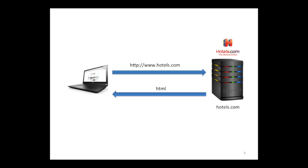As soon as you press enter, the first thing that happens is your browser sends out a request to hotels.com's server to fetch a web page. For this purpose, the browser uses a computer network protocol called HTTP. As a response, the server sends back an HTML file — a text file that contains a list of all the resources your browser has to subsequently download from hotels.com or other servers to render the web page, so you can see which hotels are available.